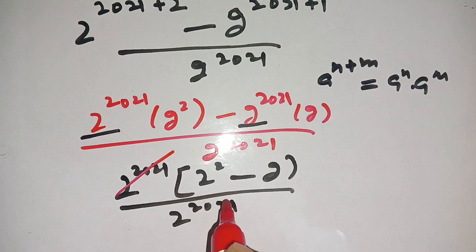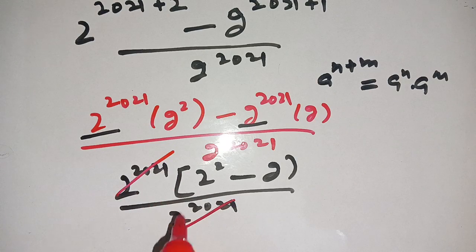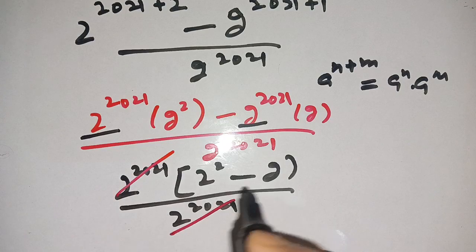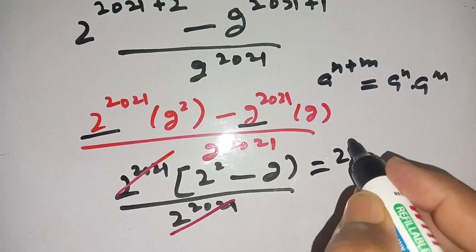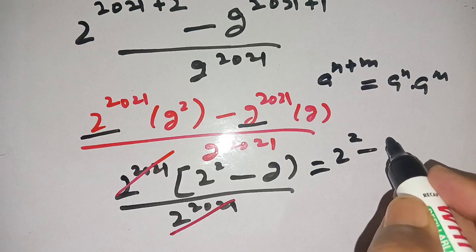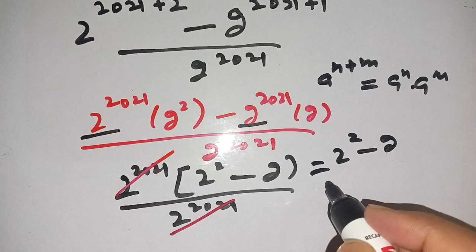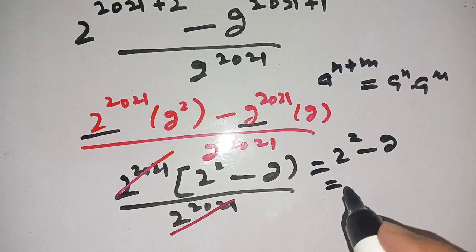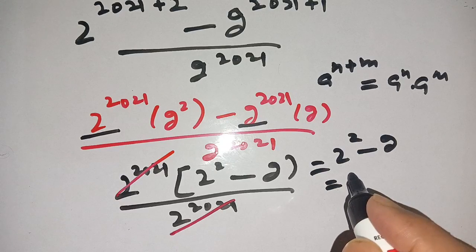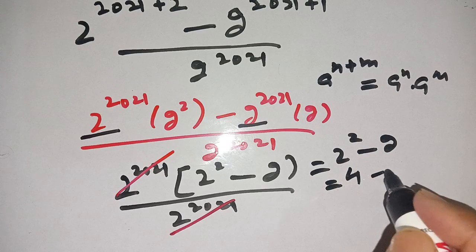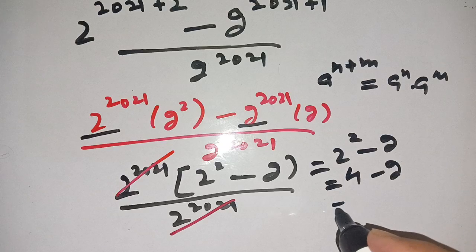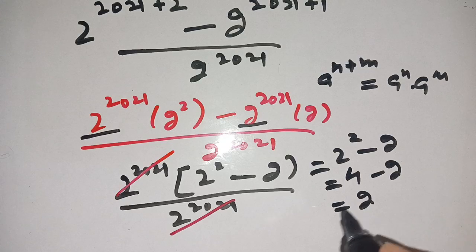Now we can cancel out 2 power 2021 in the numerator and denominator. What remains is 2 power 2 minus 2, which equals 4 minus 2, which equals 2.